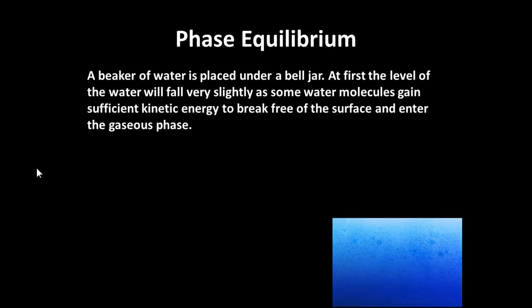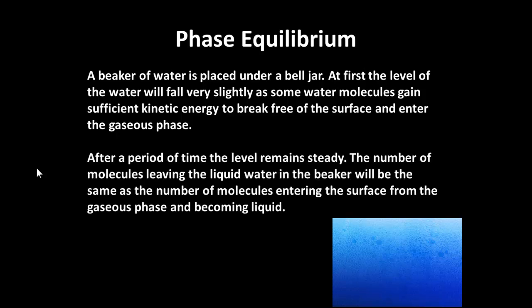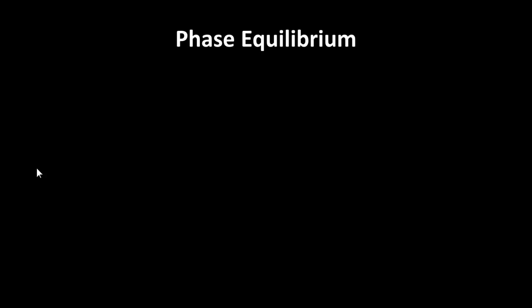A beaker of water is placed under a bell jar. At first, the level of the water falls very slightly as some water molecules gain sufficient kinetic energy to break free of the surface and enter the gaseous phase. After a period of time, the level remains steady. The number of molecules leaving the liquid water in the beaker will be the same as the number of molecules entering the surface from the gaseous phase and becoming liquid.